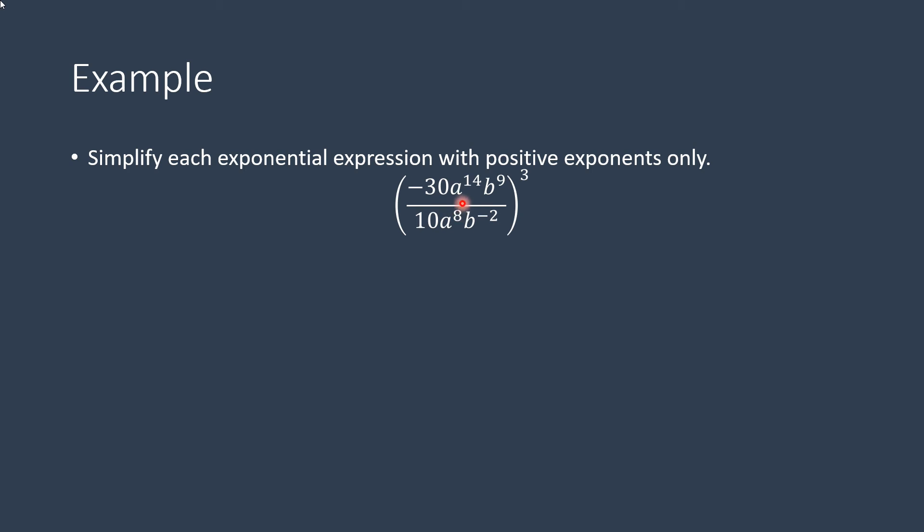These, you apply the quotient rule with the same base. So that's a to the 14th over a to the 8th. Subtract those. That's 14 minus 8, which is 6.